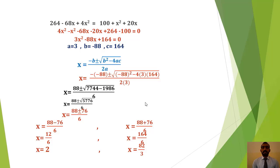This is a standard form of quadratic equation. So we use the quadratic formula: x = [−B ± √(B²−4AC)] / 2A. Comparing: A = 3, B = −88, C = 164. Substituting: x = [−(−88) ± √((−88)²−4·3·164)] / (2·3) = [88 ± √(7744−1968)] / 6.